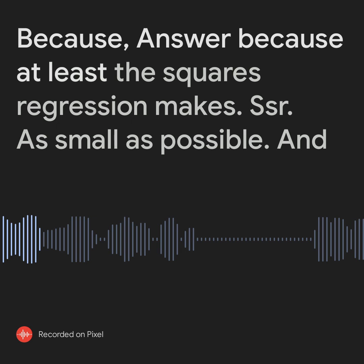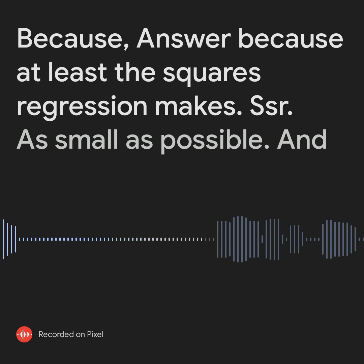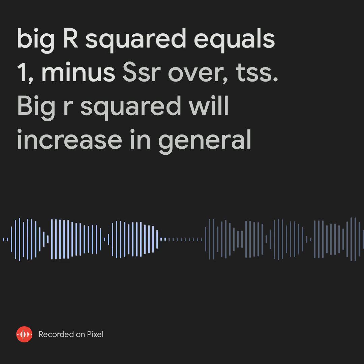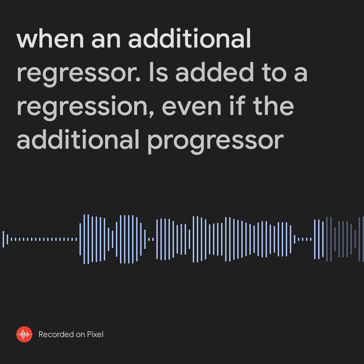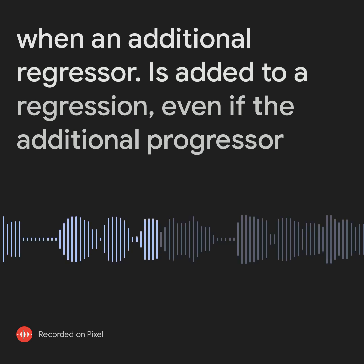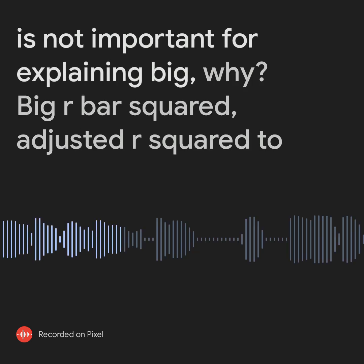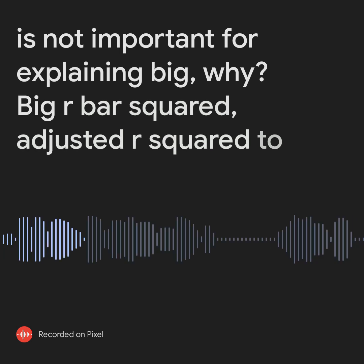Answer. Because OLS regression makes SSR as small as possible, and R squared equals 1 minus SSR over TSS, R squared will increase in general when an additional regressor is added to a regression, even if the additional regressor is not important for explaining Y. R bar squared, or adjusted R squared, is used to eliminate this bias.